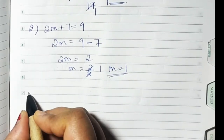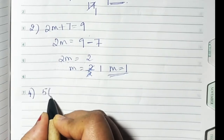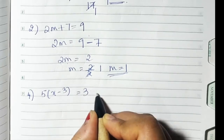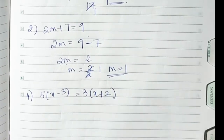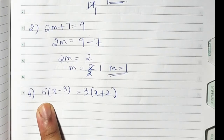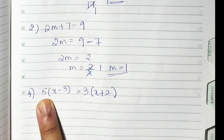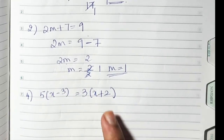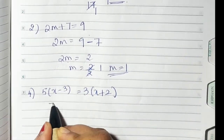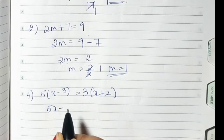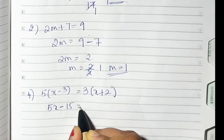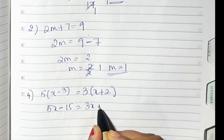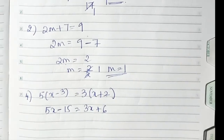Sum number 4: 5 into x minus 3 is equal to 3 into x plus 2. First, multiply the outside number into each term of the bracket. So 5 into x is 5x, minus 3 into 5 is 15, equals 3 into x is 3x, and 3 into 2 is 6. The multiplication part is done.